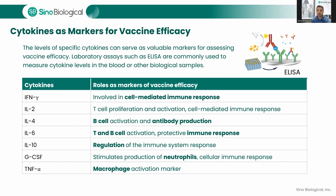By carefully assessing cytokine profiles, vaccine developers can gain insight into the immune response and the effectiveness and safety of the vaccine. Examples of cytokines released after immunization with an RSV vaccine include interferon gamma, TNF-alpha, interleukin-2, -4, -6, -10, -17, and -27. Laboratory assays such as ELISA are commonly used to measure cytokine levels in blood or other biological samples. For example, increased IL-2 levels following vaccination can indicate successful T cell activation, suggesting a robust cellular immune response, while elevated IL-4 can indicate effective B cell activation, implying a potent antibody response.